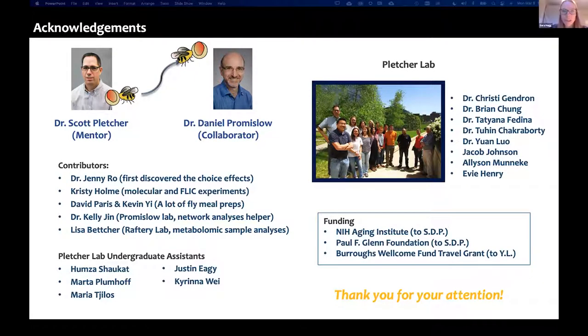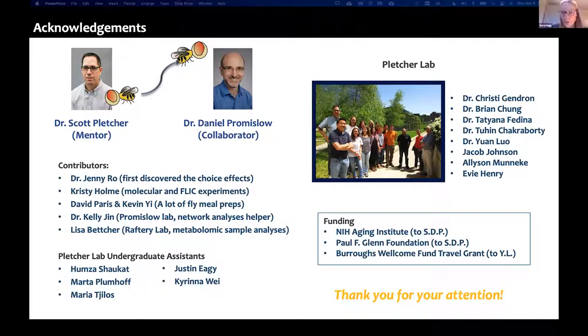Thank you very much, Yang — really super fascinating. You would think it's the sugar that's causing this difference, but it's not really. Only partially. Does the choice of sugar or yeast change as a function of age in the flies? That's a great question. We haven't done any age-specific measure of feeding. We observe flies start to die at really early ages, like two weeks, so we need to look at multiple data points at earlier ages.